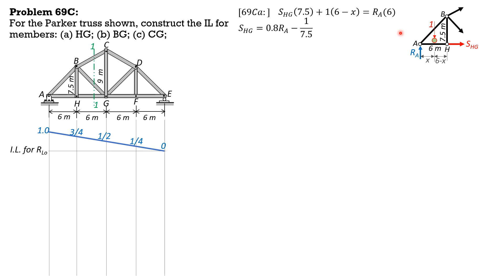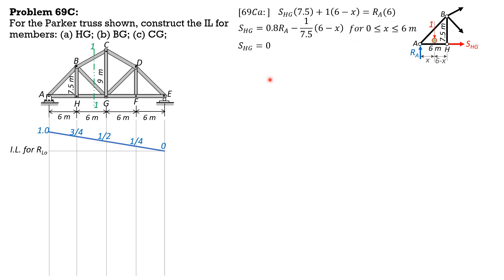Simplifying, S_HG equals 0.8·R_A minus (1/7.5)·(6 minus x). We will not simplify this further so that the imaginary unit load is retained. When the unit load is no longer part of the free body diagram, simply remove it. So this formula applies for 0 ≤ x ≤ 6 meters. Beyond that, the unit load is removed, giving S_HG = 0.8·R_A, for x ≥ 6 meters.